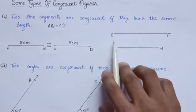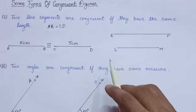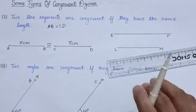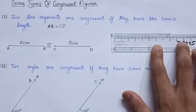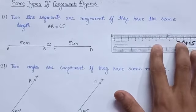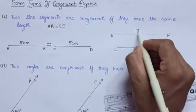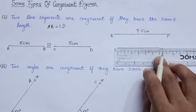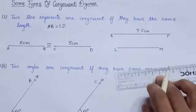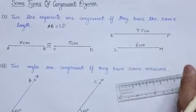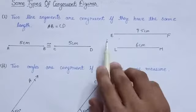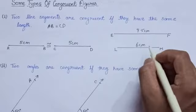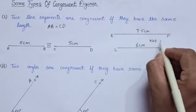Now let us see whether these two lines EF and LM are congruent or not. If you measure the length of EF, then you can see it measures 7.5 cm. But the line segment LM measures only 6 cm. Hence, you can see that the measures of line segments EF and LM are not equal. Hence, we can say these two line segments are not congruent.